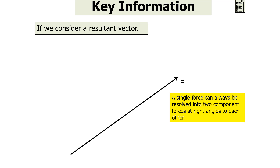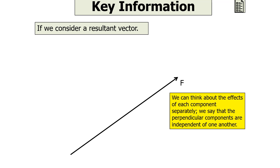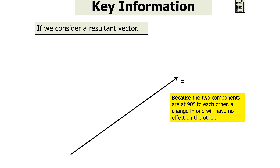Resolve means to split. The two component values added together will give the same effect as the single resultant value. A single resultant vector can be resolved into horizontal and vertical components. We can think about the effects of each component separately. As perpendicular components are independent of each other — because the two components are 90 degrees to each other — a change in one component will have no effect on the other.